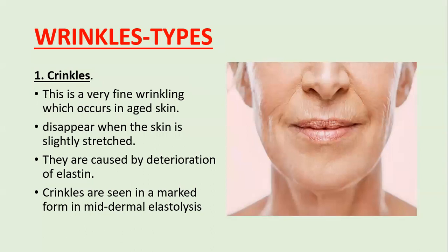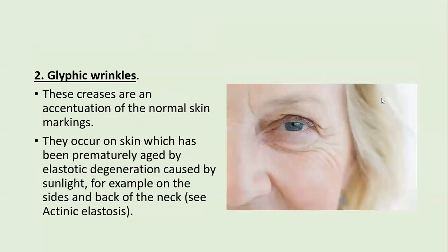Wrinkles can be divided into various subtypes. The first and most superficial are called crinkles — very fine wrinkles seen on the side of the cheeks, around the lips, and on the chin. They disappear when the skin is slightly stretched and are caused by deterioration of elastin. Crinkles are seen in marked mid-dermal elastolysis — they result from elastin disintegration, not collagen.